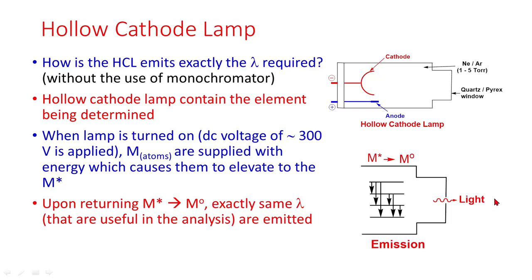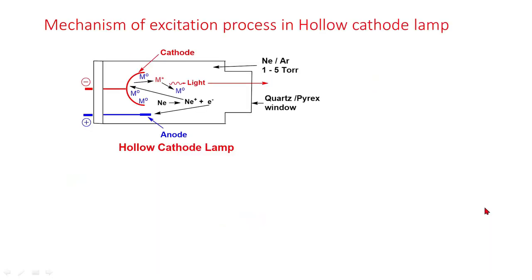When the lamp is turned on, when we apply DC voltage of about 300 volts, metal atoms are supplied with energy which causes them to go to the excited state. Then the excited state atoms, when they come to the ground state, emit characteristic radiation.